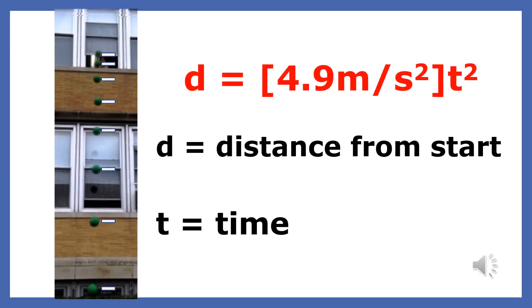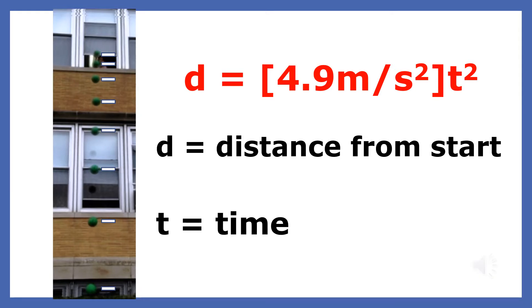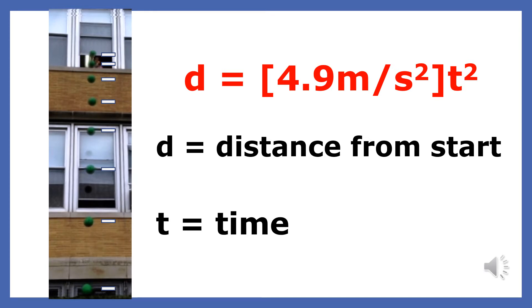When an object is dropped and the friction on it is minimal, the position of the ball at any moment of time can be predicted using the following equation. Furthermore, as long as friction is negligible, the mass of the ball dropped has no effect on its position at any given moment of time. If a bowling ball were dropped from the same window, we would get the same spacing you see here, and the ball's position at any given moment of time could be found using the very same equation.